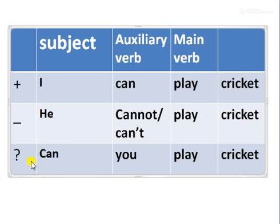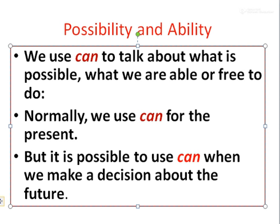Interrogative form: can you play cricket? Possibility and ability: we can use 'can' to talk about what is possible, what we are able or free to do. Normally we use 'can' for the present, but it is possible to use 'can' when we make a decision about the future.